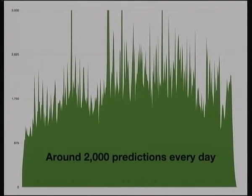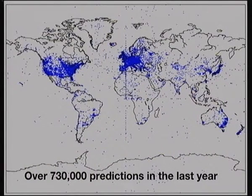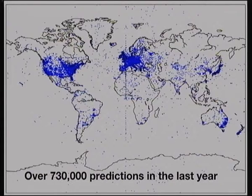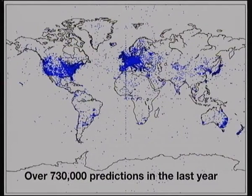We've got some usage stats — we were inspired at last year's conference to start collecting this data. This is how many predictions we've run per day over the last year. This line is 1,750 per day, and we work out to about 2,000 on average for the last year. This chart shows every location someone's run a prediction from in the last year, which is 730,000 predictions. There's a strange line — I think someone may have typed a zero one too many times or someone's running a script. What you can see is pretty much everywhere there are people, there are predictions. Antarctica is dotted with them, as is the middle of the ocean.